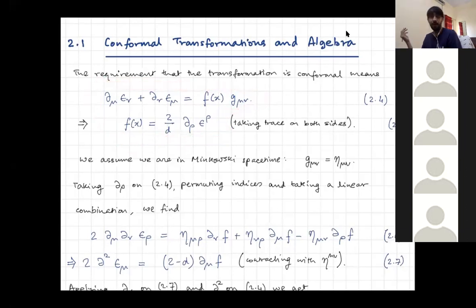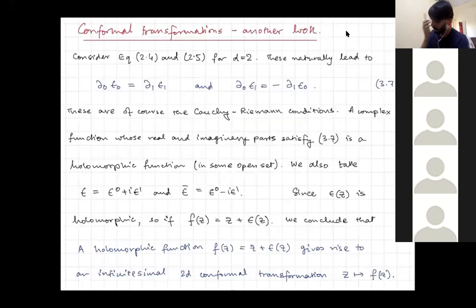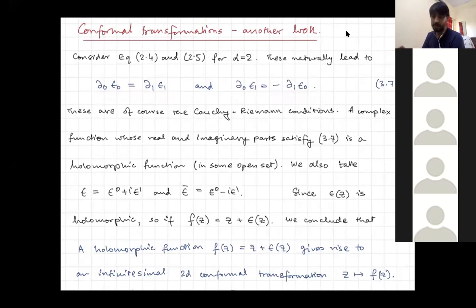These were true for any dimension d. So what we're going to do is take d equal to two and see what happens. This factor out here just becomes one. So the two equations that emerge for d equal to two become: del-zero epsilon-zero equals del-one epsilon-one, and del-zero epsilon-one equals minus del-one epsilon-zero.